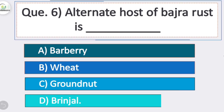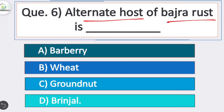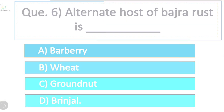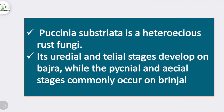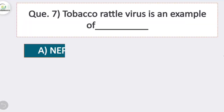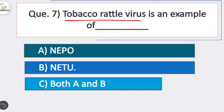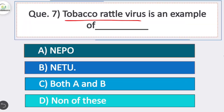Question 6: the alternate host of bajra rust is? Option D is correct — brinjal. Uromyces substriata is a heteroecious rust fungus; its uredial and telial stages develop on bajra, while the pycnial and aecial stages commonly occur on brinjal.